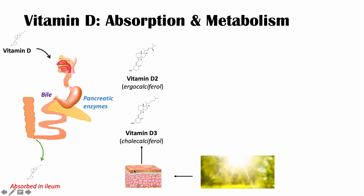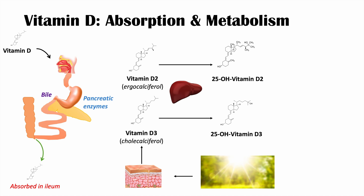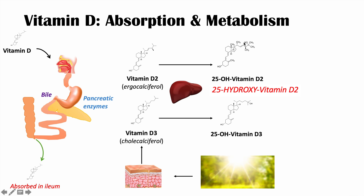When we have vitamin D2 and vitamin D3, they both go to the liver and get acted on by an enzyme called 25-hydroxylase. This enzyme adds a hydroxyl (OH) group to each of them. So we get 25-hydroxyvitamin D2 and 25-hydroxyvitamin D3.